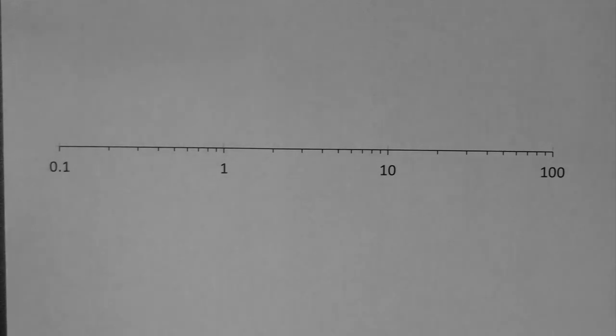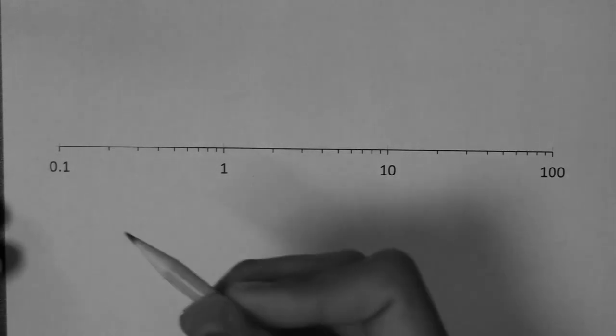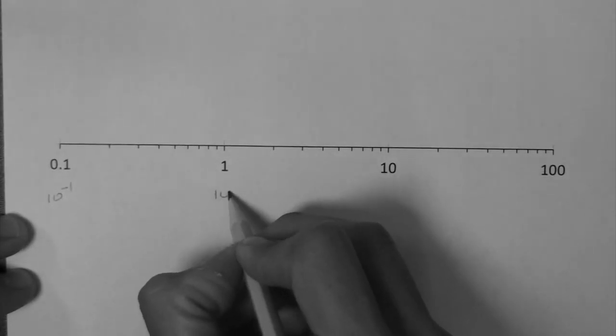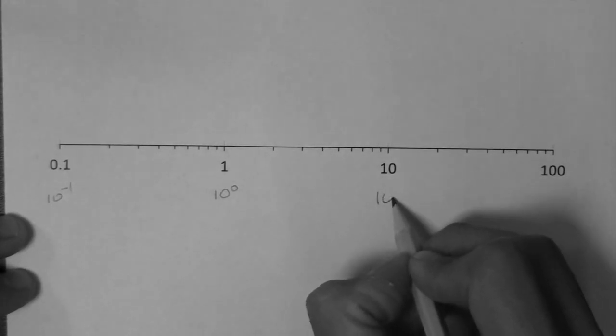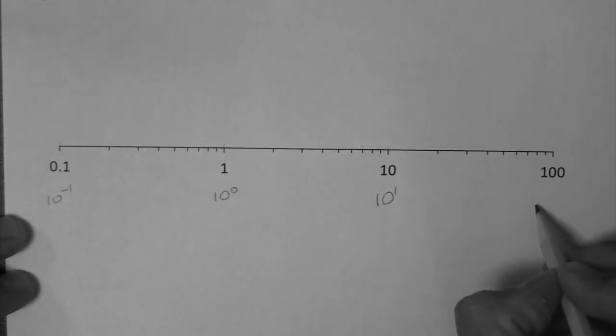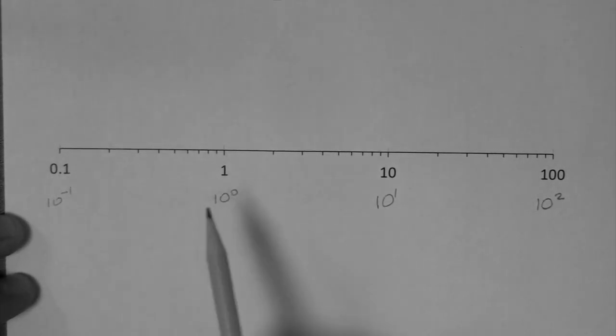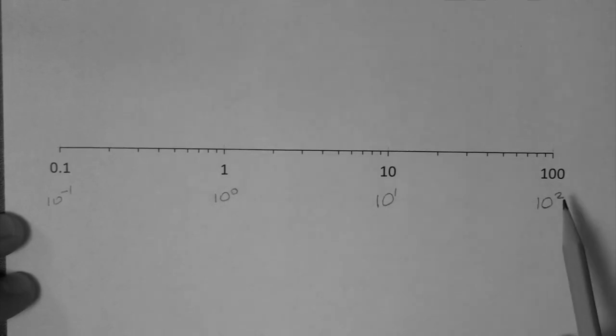It's simpler to just see it this way. 0.1 is 10 to the minus 1, 1 is 10 to the 0, 10 is 10 to the 1, and 100 is 10 to the 2. Look at the exponent: minus 1, 0, 1, 2, etc.